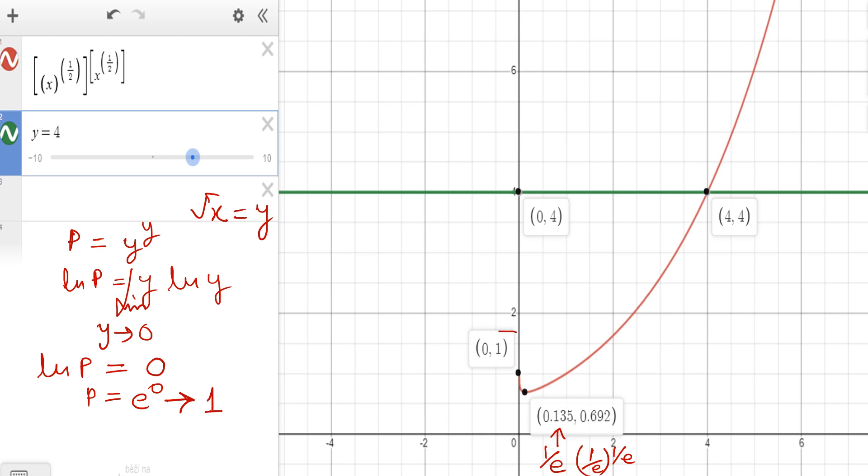That is why you can see this point is 0, 1. The graph will start from 1 and then it will attain minima and then it is climbing towards infinity. So this is your graph √x^√x. This is the graph.